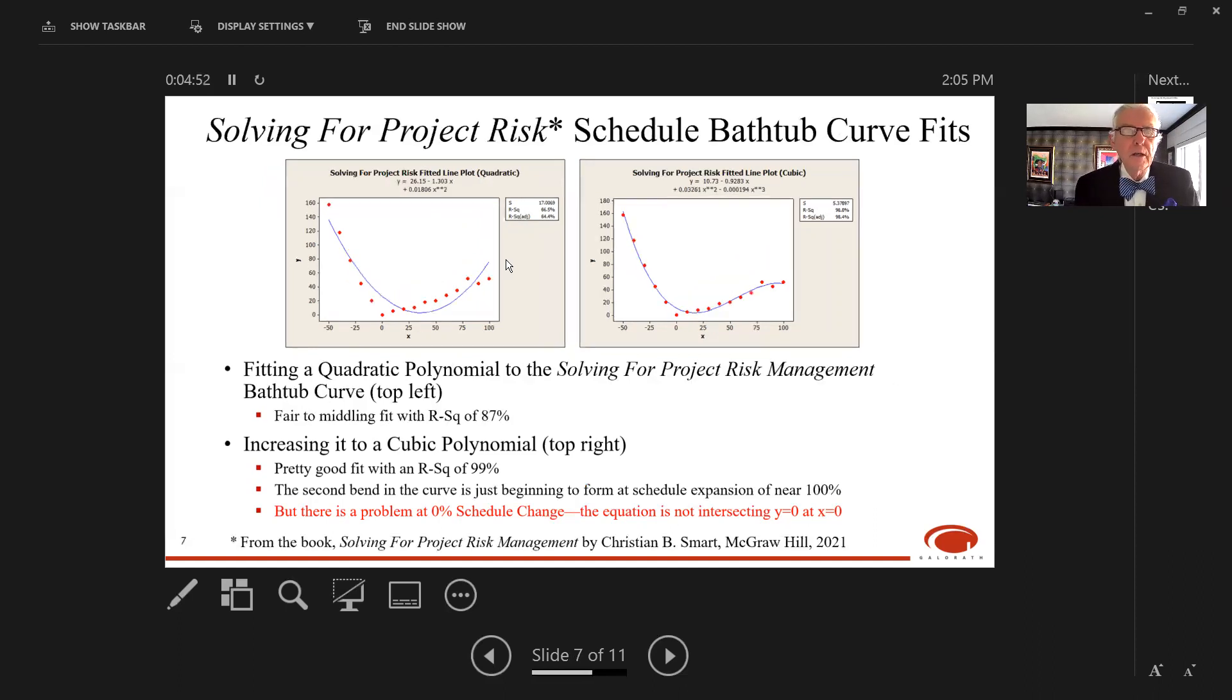Let's do the same thing using the curve from the project risk book. I tried a quadratic polynomial, getting slightly better results with R squared of 87 percent. But we can do better with the cubic polynomial, which gives R squared of 99 percent and fits the data points very closely. Again, we see a second bend in the curve at schedule expansion near 100 percent, but as long as you don't go out in that territory, the model does pretty well. There's that same problem of zero percent schedule change not yielding Y equals zero.